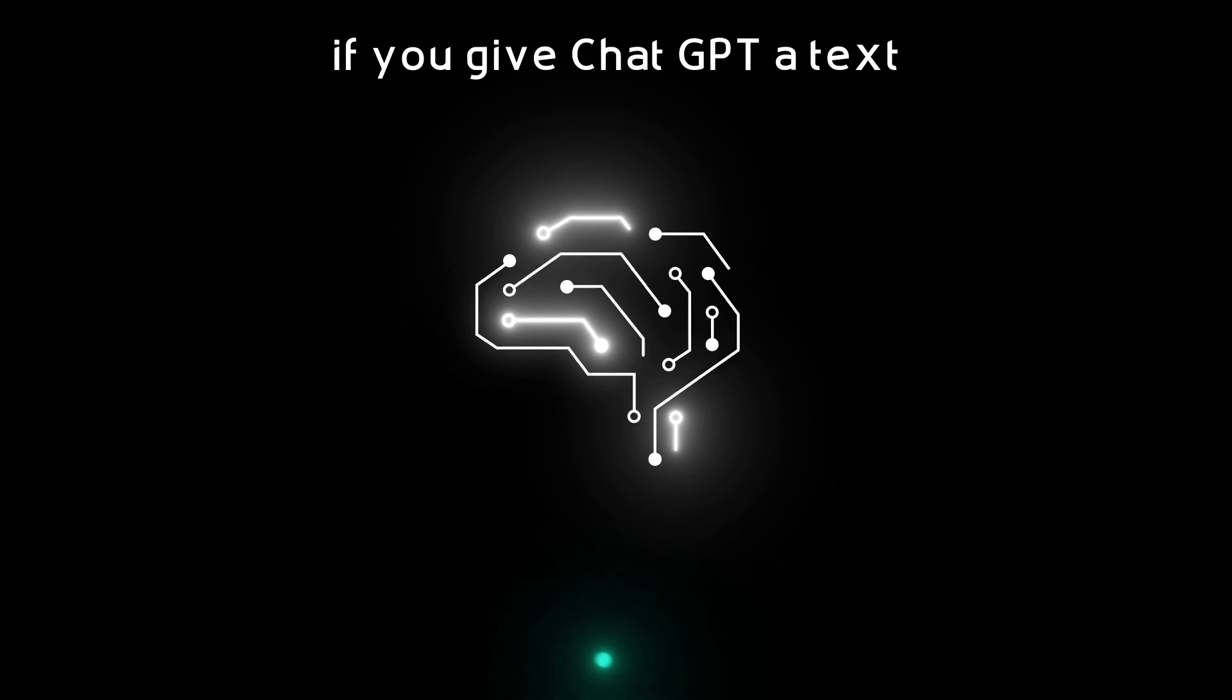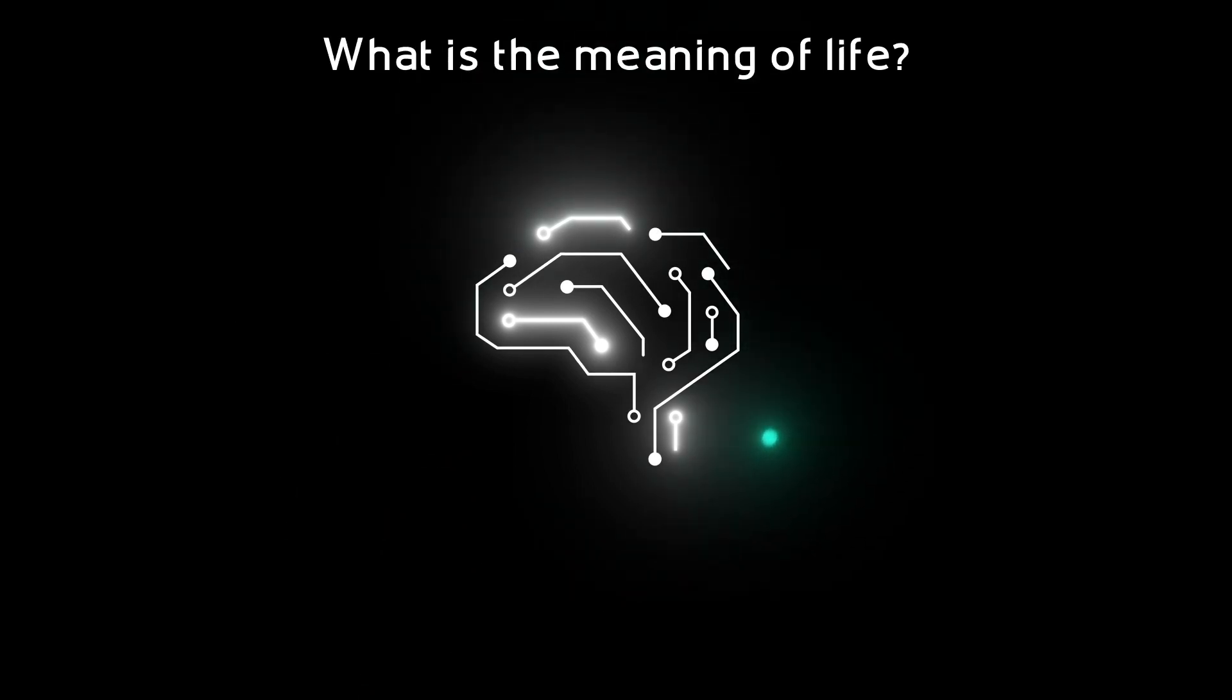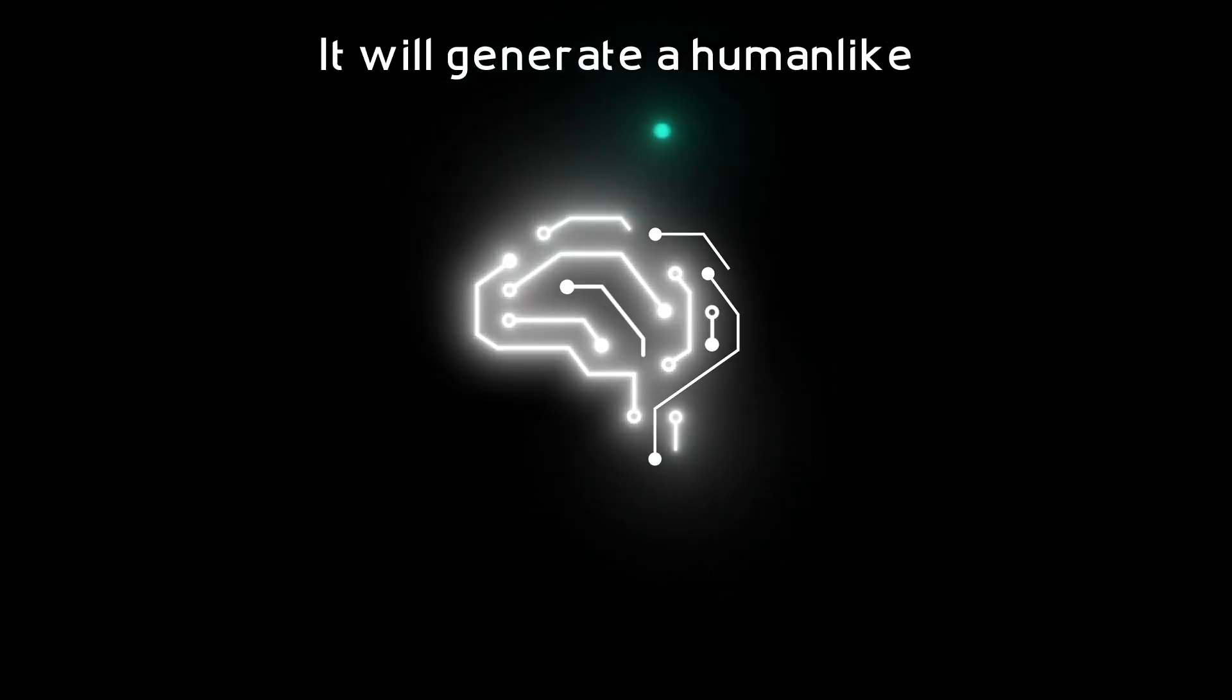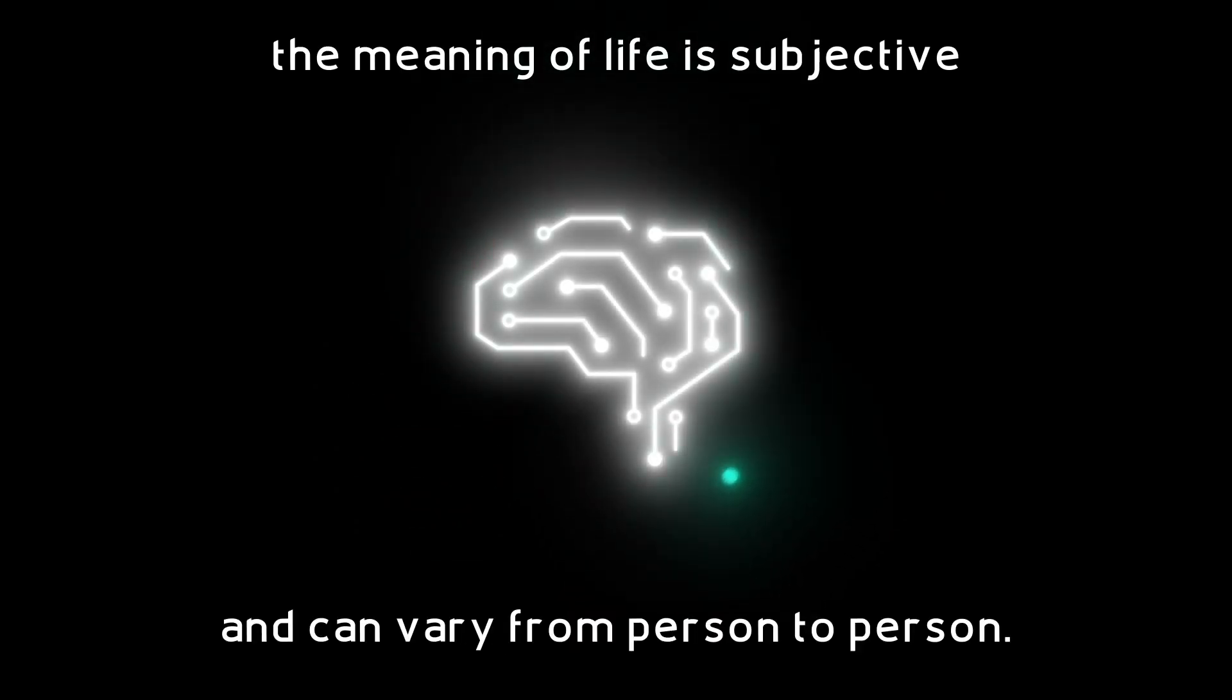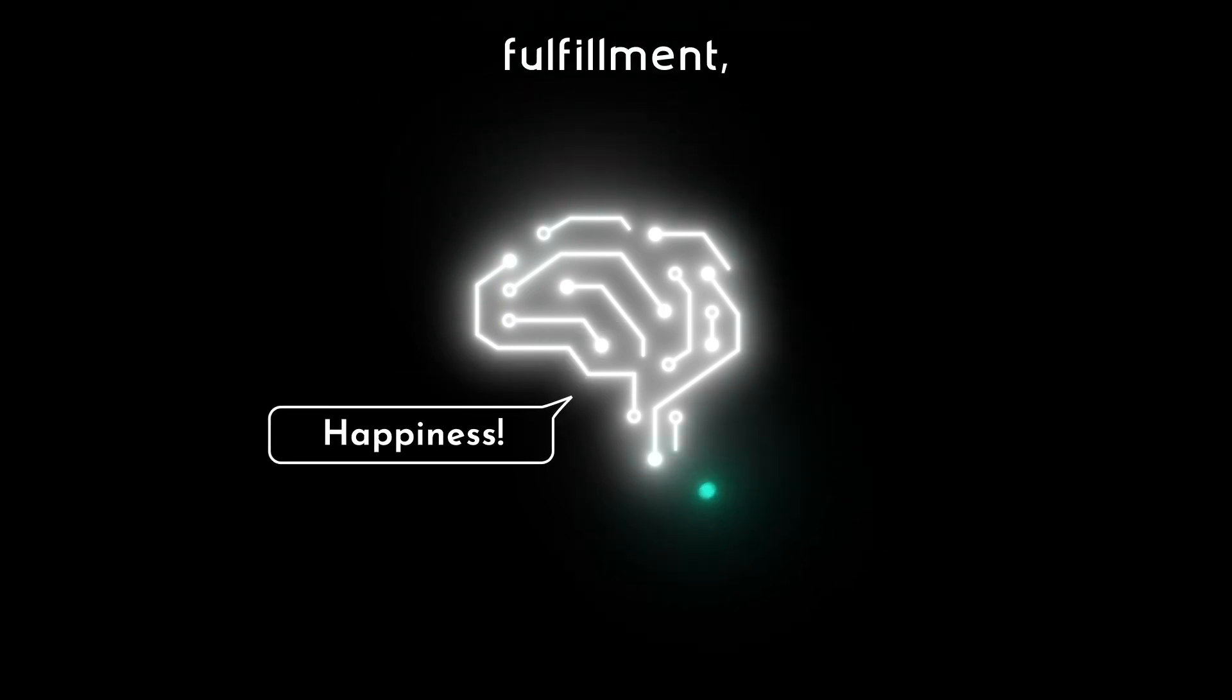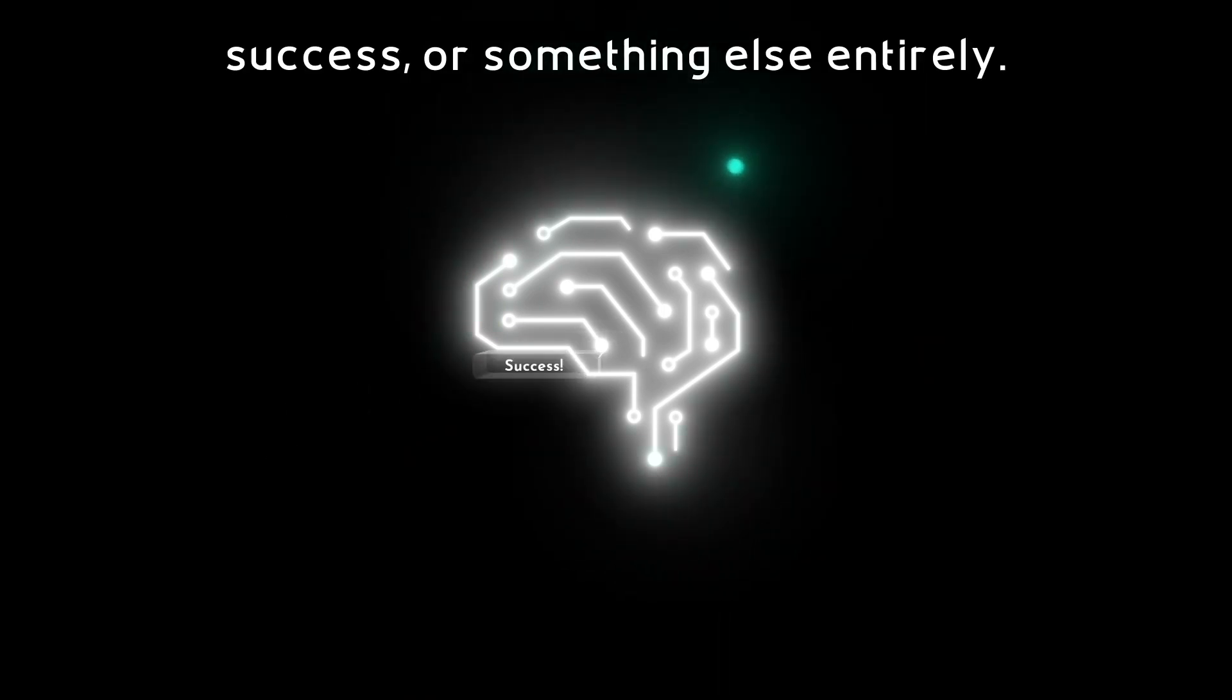For instance, if you give ChatGPT a text prompt such as, What is the meaning of life? It will generate a human-like response such as, The meaning of life is subjective and can vary from person to person. It could be happiness, fulfillment, success, or something else entirely.